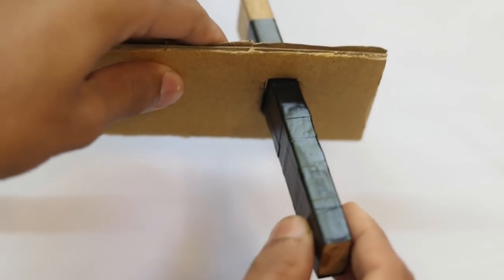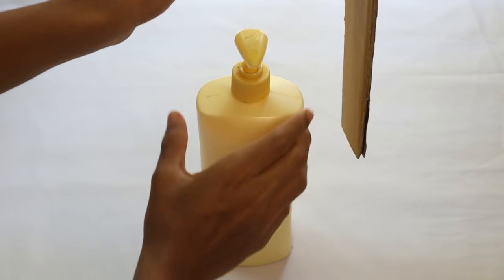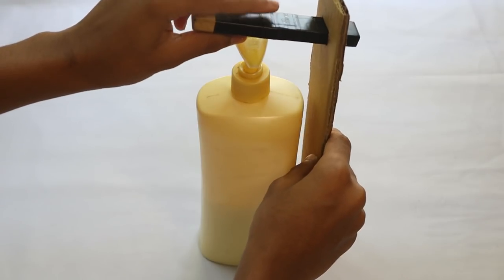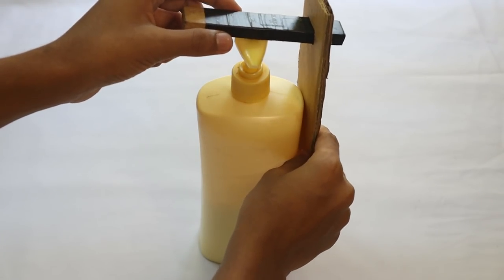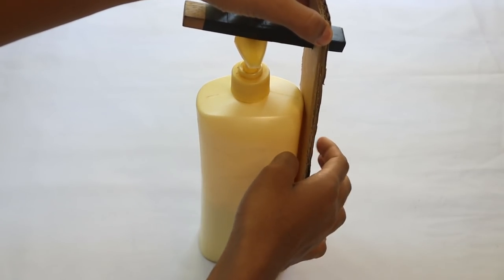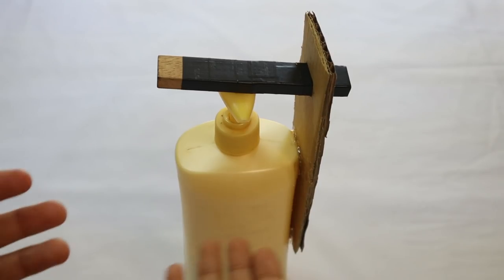Now make sure it also moves up and down. The next step is to put your cardboard on the side of your dispenser like that. Make sure that wooden part touches here. You need to hot glue the cardboard to the dispenser like that. Now I have hot glued it.